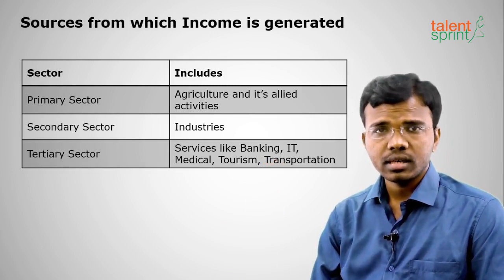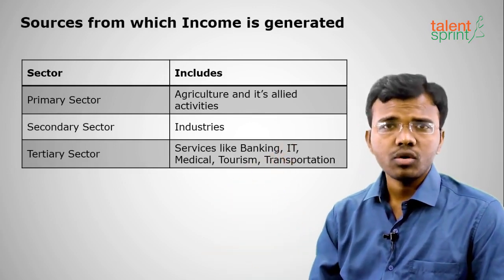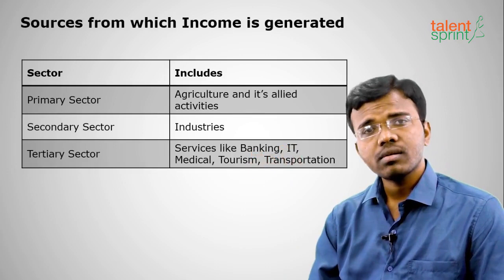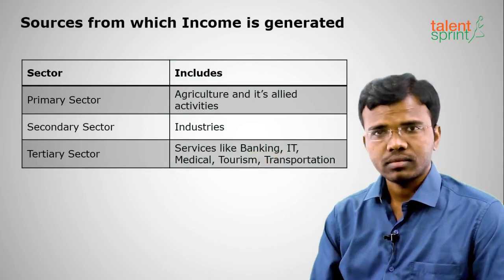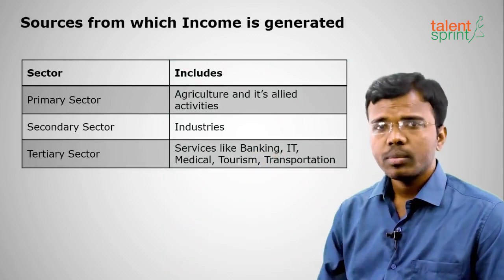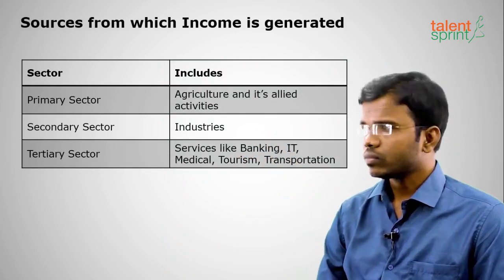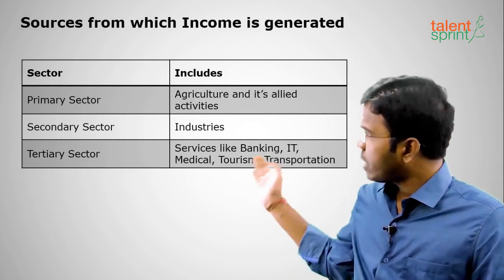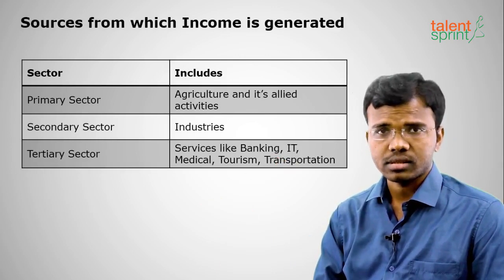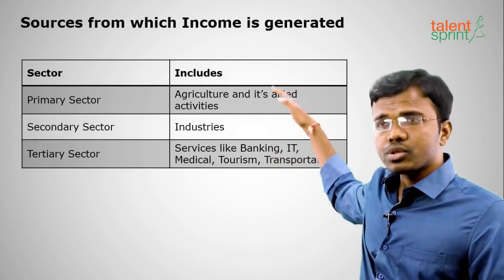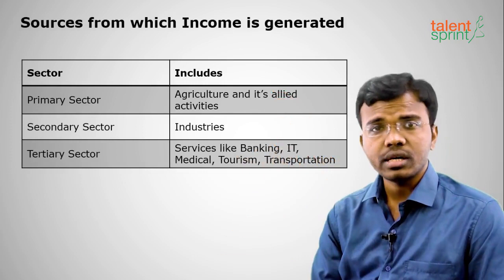Raw material from the primary sector is sent to the secondary sector for processing in industries. For example, wheat given by the farmer is made into bread by the baking industry in the secondary sector. The tertiary sector provides services to both the primary and secondary sectors — banking, transportation, medical, and tourism are examples.